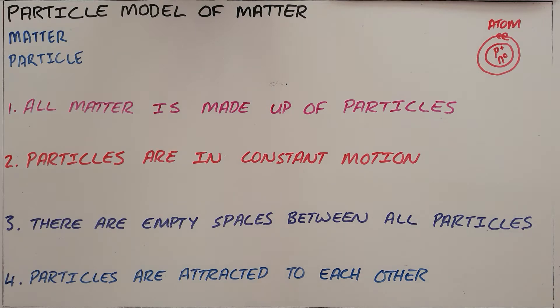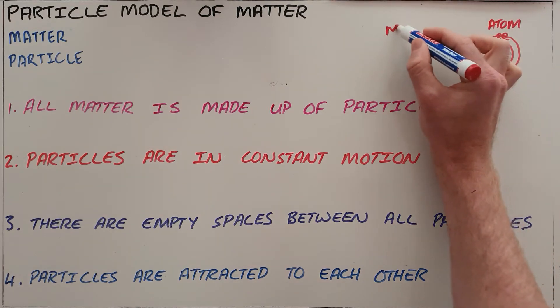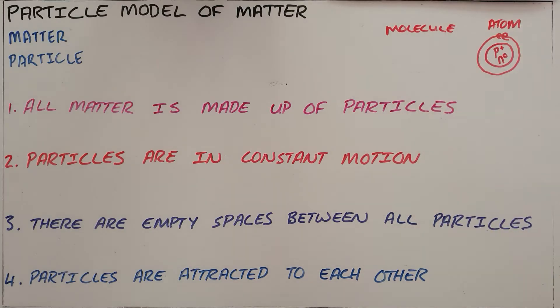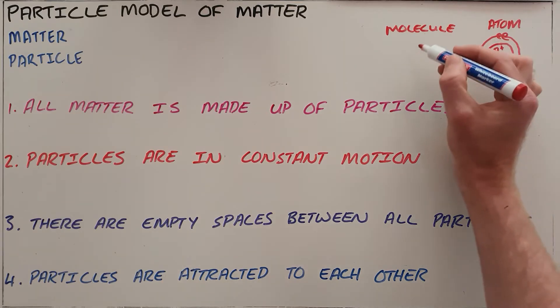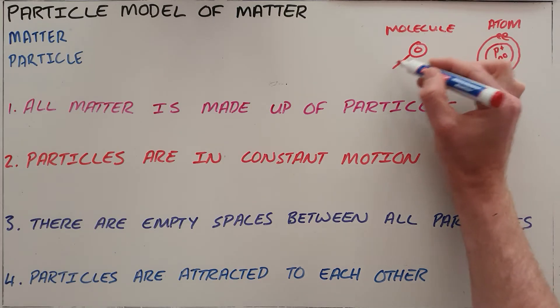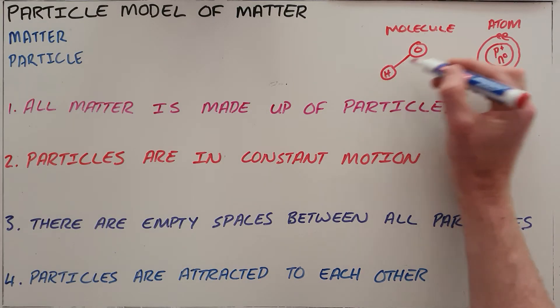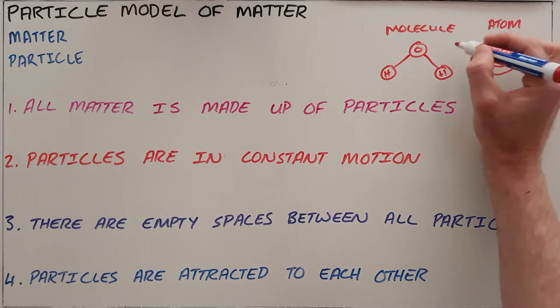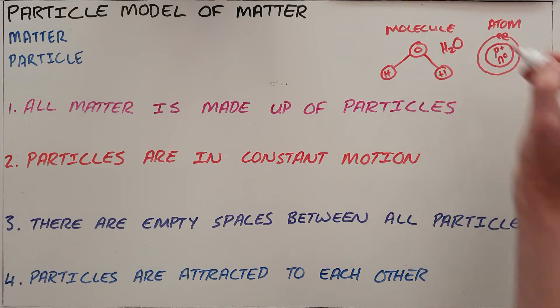The second type of particle is the molecule, and we know that a molecule is just two or more atoms that are chemically combined in a fixed ratio. A common example here would be a water molecule that contains two hydrogens bonded to a single oxygen, which gives it the formula H2O.